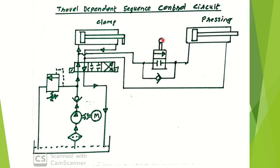When the clamping piston reaches the extreme position, it actuates the 2/2 direction control valve. The fluid now starts flowing toward the pressing cylinder. The check valve allows fluid only in one direction — from right to left — so the fluid enters the pressing cylinder from the correct end, performing the pressing operation. The fluid from the other side of the pressing cylinder drains to the reservoir via the direction control valve. In this way, the sequencing operation is performed using the travel-dependent sequence control circuit.